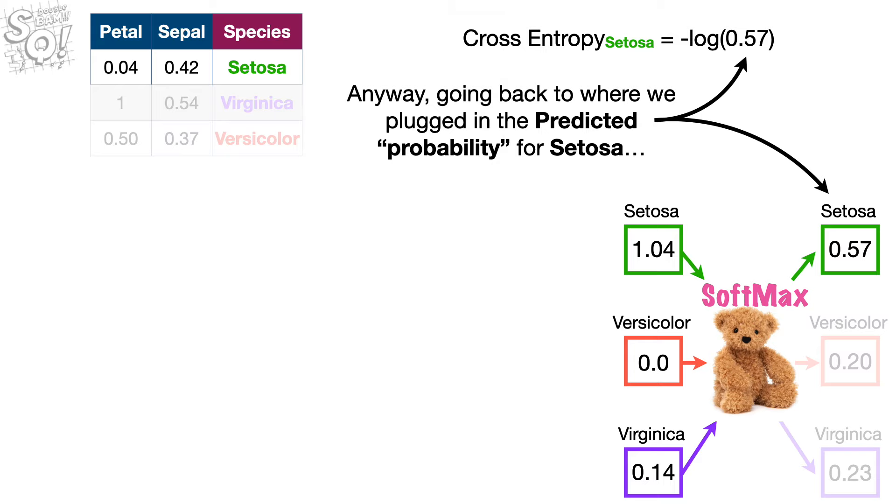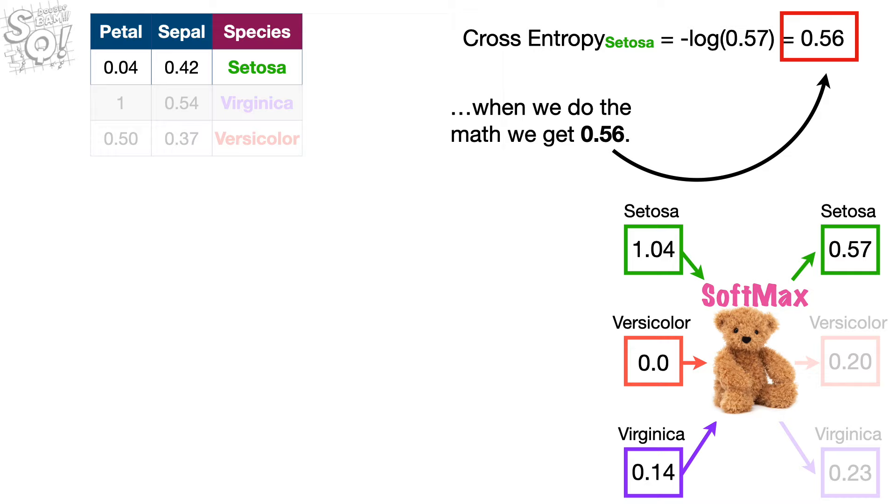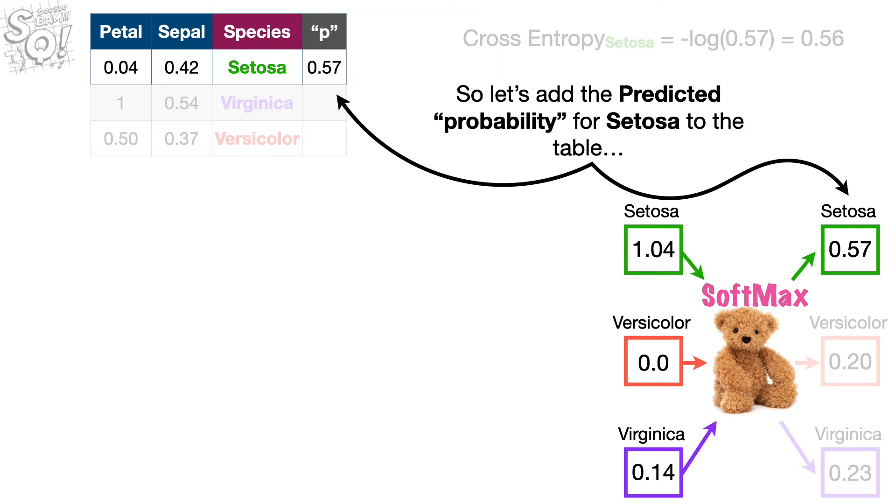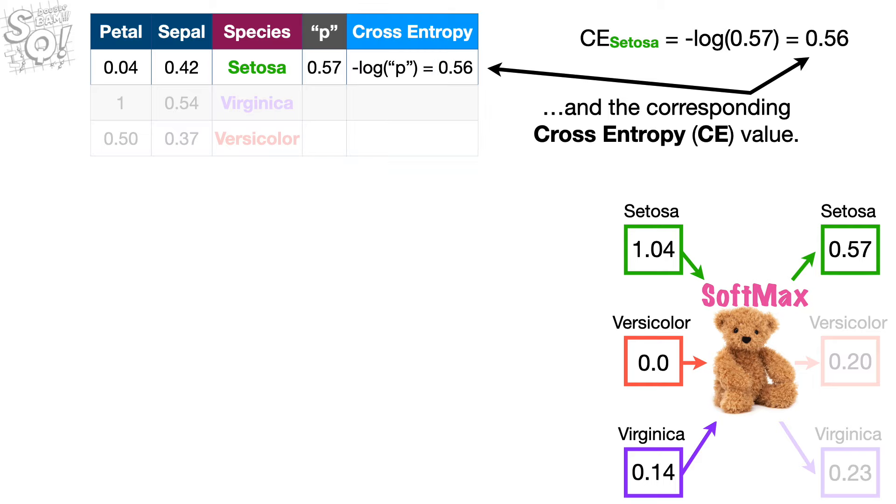Anyway, going back to where we plugged in the predicted probability for Setosa, when we do the math, we get 0.56. So let's add the predicted probability for Setosa to the table, and the corresponding cross-entropy value.